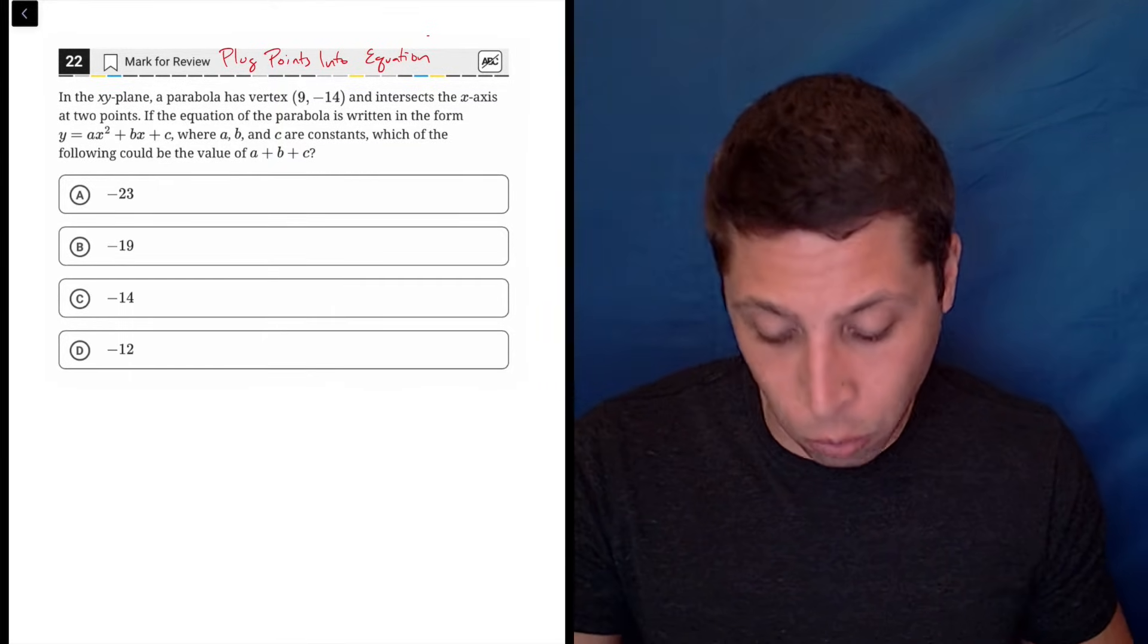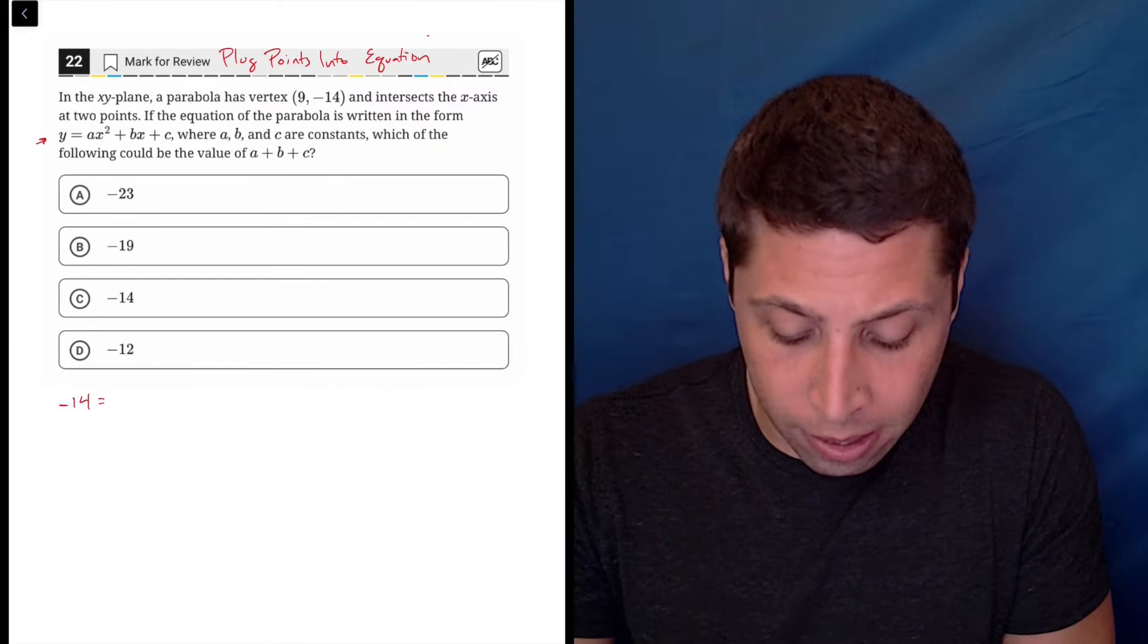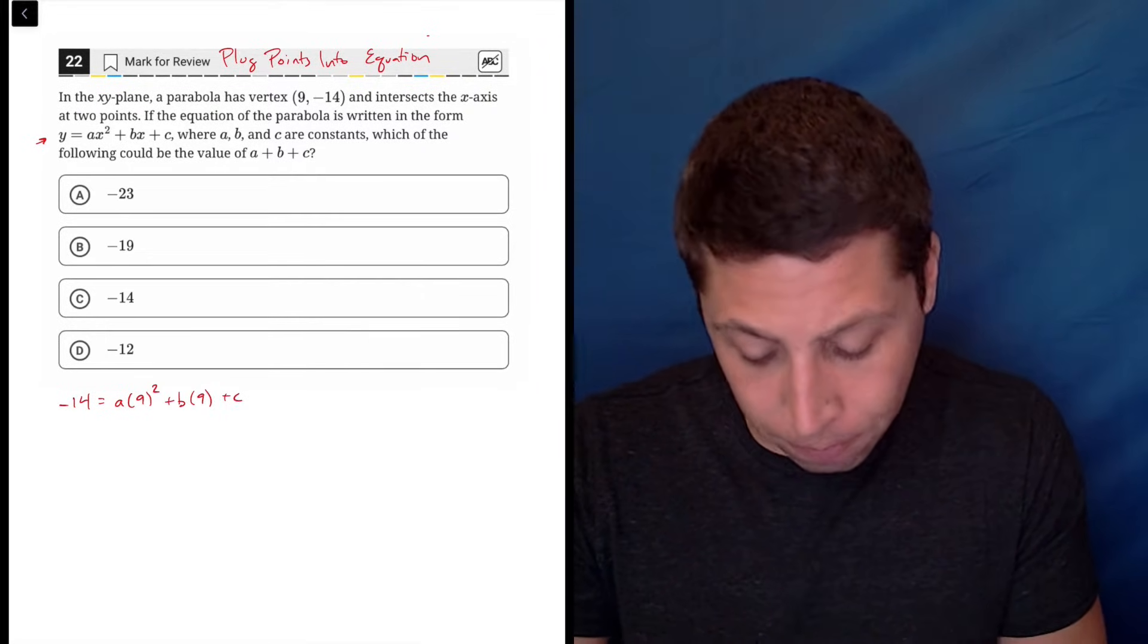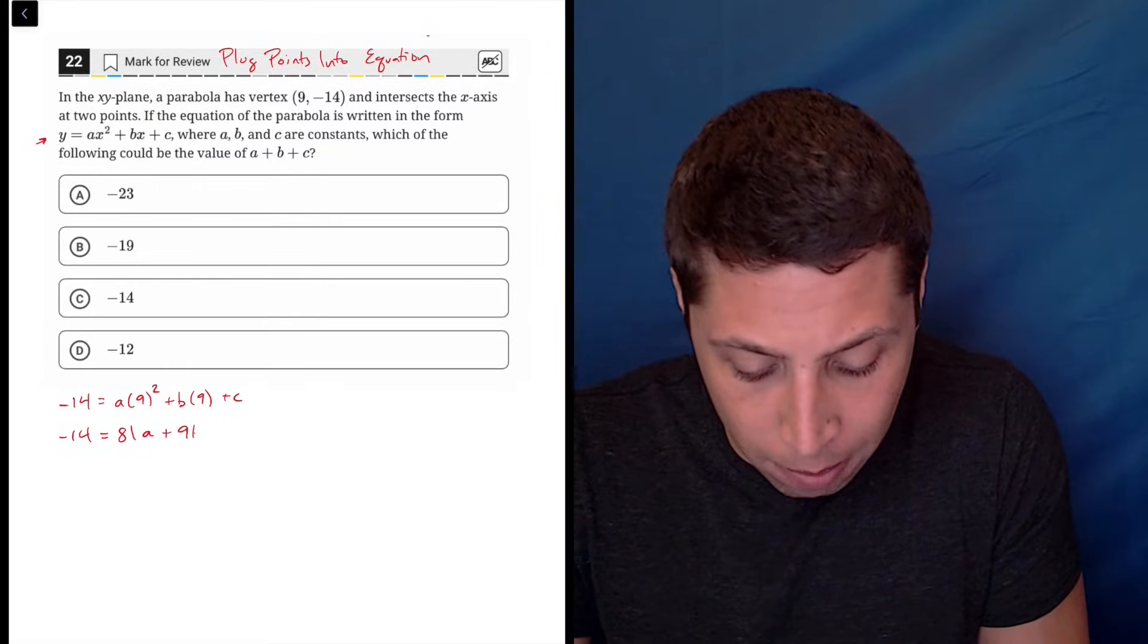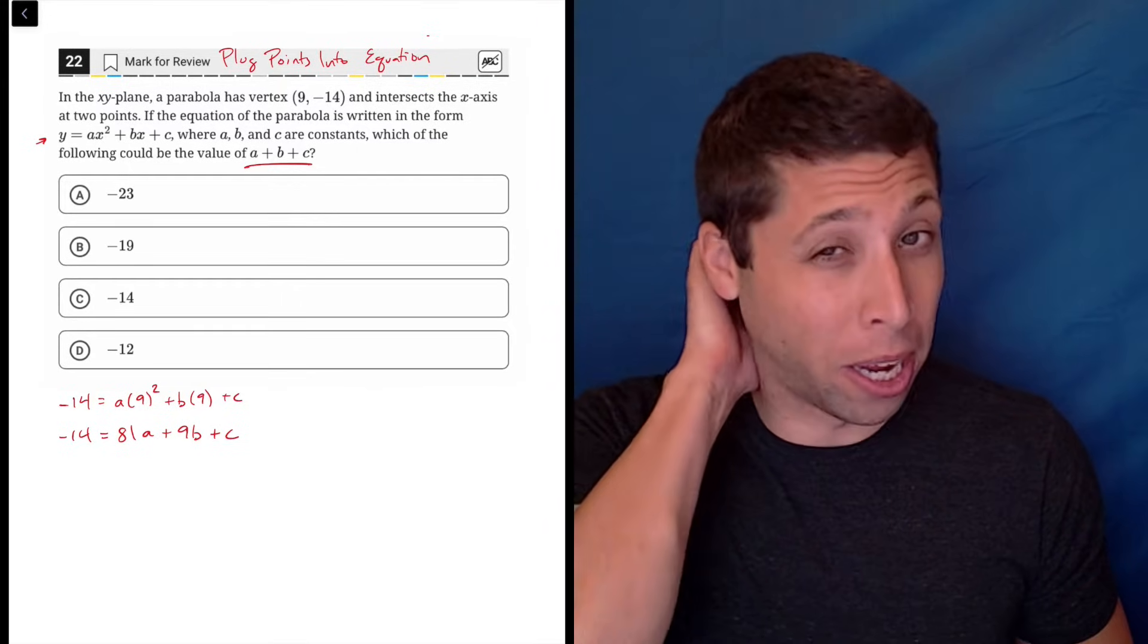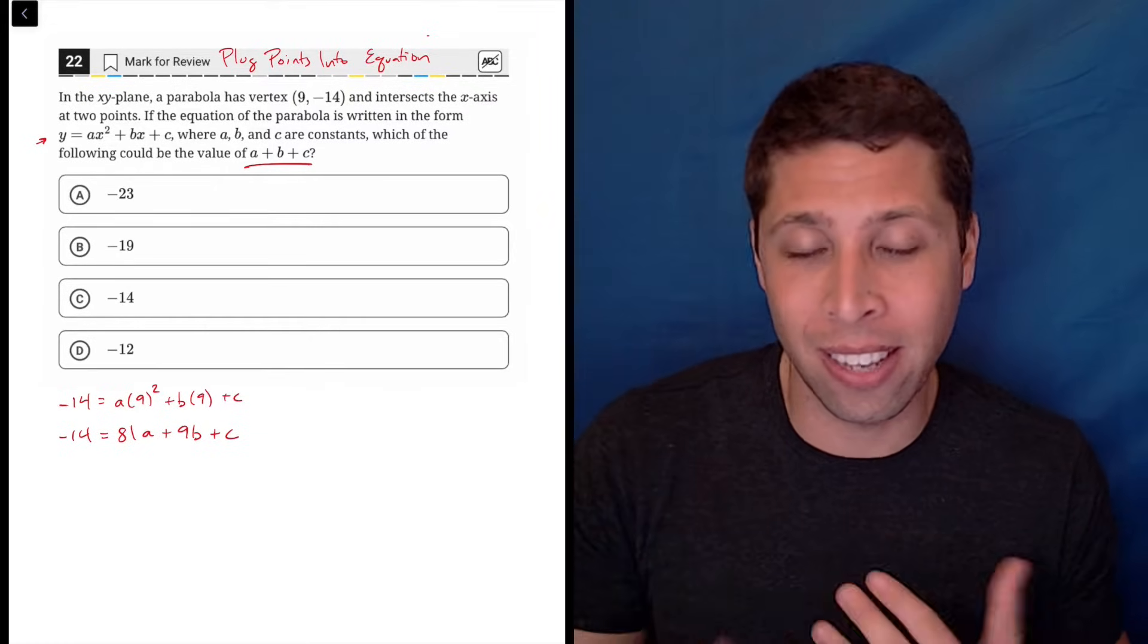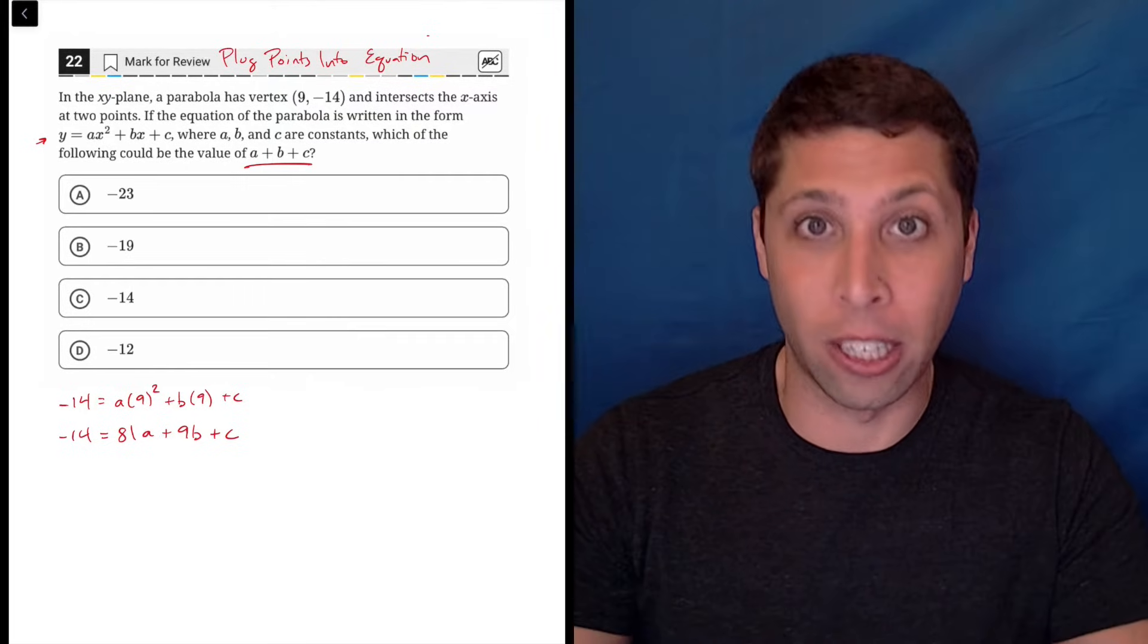So the nine is the X, the negative 14 is the Y. So going with this equation, we'd have negative 14 is equal to A times nine squared plus B times nine plus C. So we can clean that up. Negative 14 is equal to 81A plus 9B plus C. And looking where we need to end up, it feels like we're kind of close, but we're really not because there's no way for me to just take the 81 off the A or the nine off the B. It's just not going to work. So getting from where we are to there is going to require some cleverness.